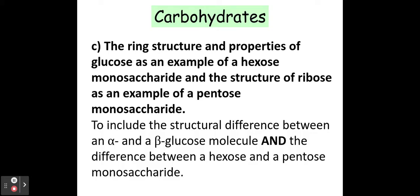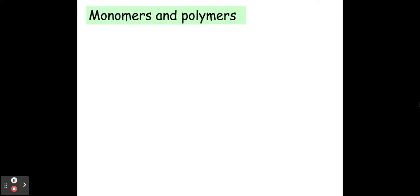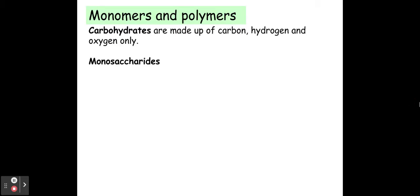So to start off with we need to have a look at the differences between alpha and beta glucose and then move on to how they're joined together. So a monomer, this is a single unit whereas a polymer is several monomers joined together.